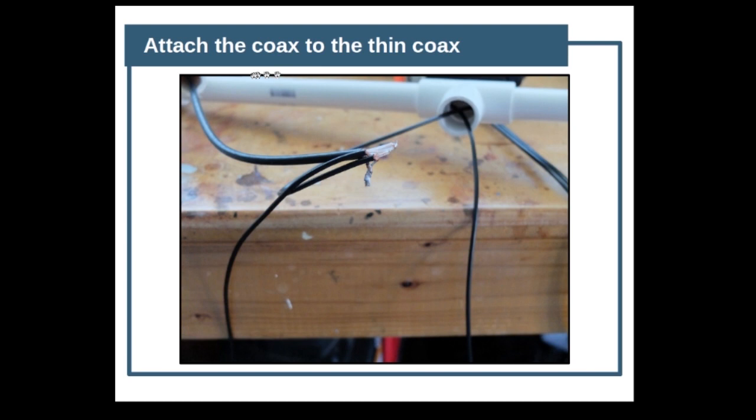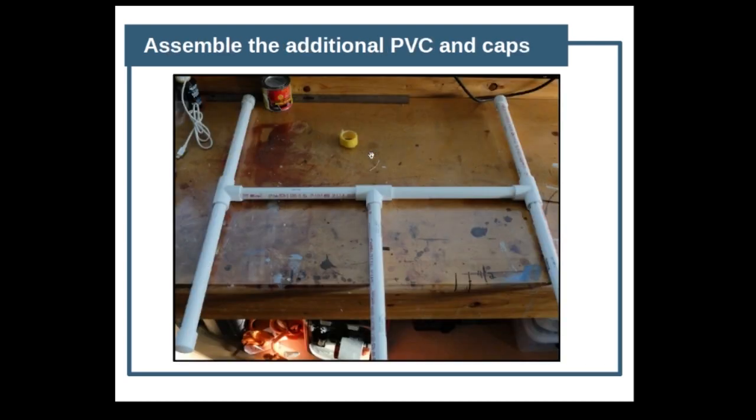The last soldering step is we're going to attach the coax to the thin coax. You can see here we just have it all soldered, then I put a couple of wire ties on it to make it all nice and neat. Then we're going to assemble all the PVC and stuff everything in, making sure all the wire is stuffed inside, and now we're done.